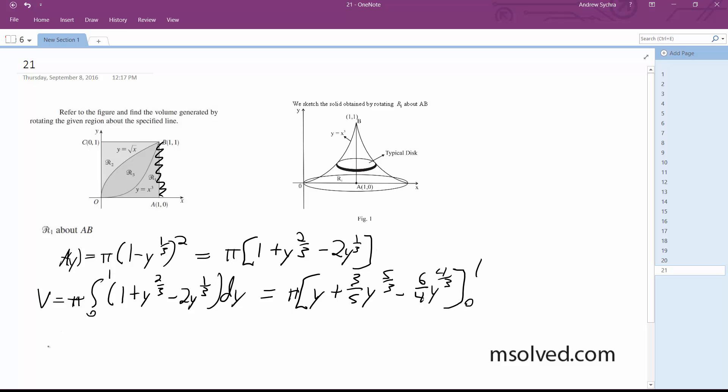Alright, so then we get π times (1 + 3/5 - 6/4), which is equal to π times 8/5.